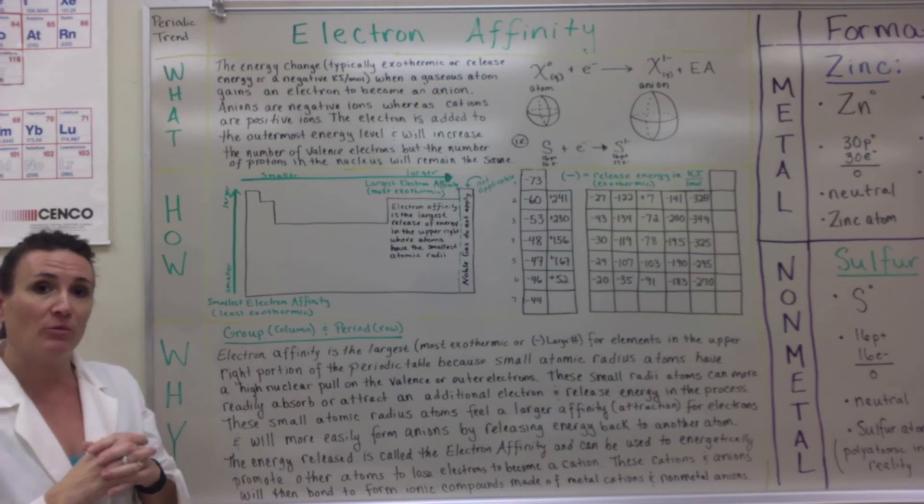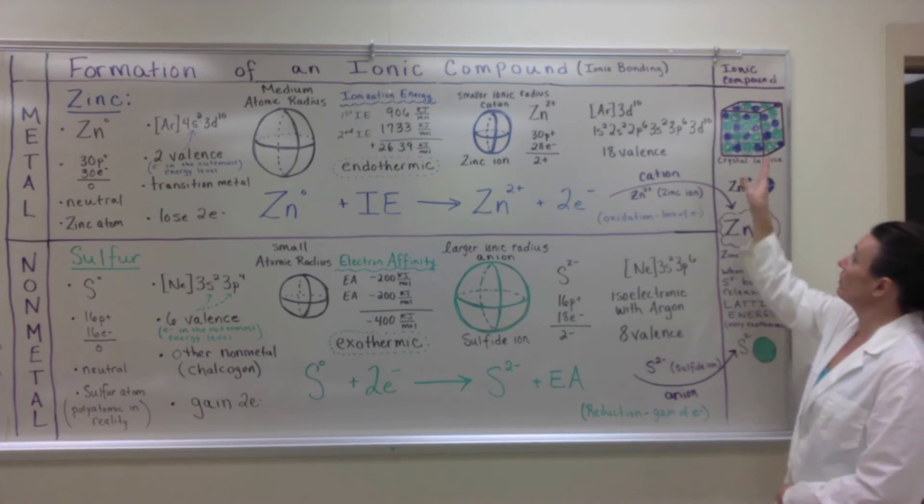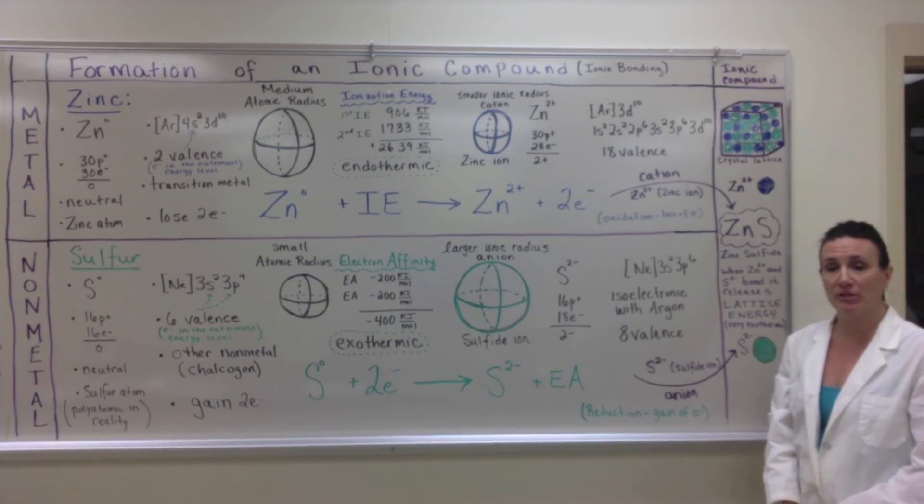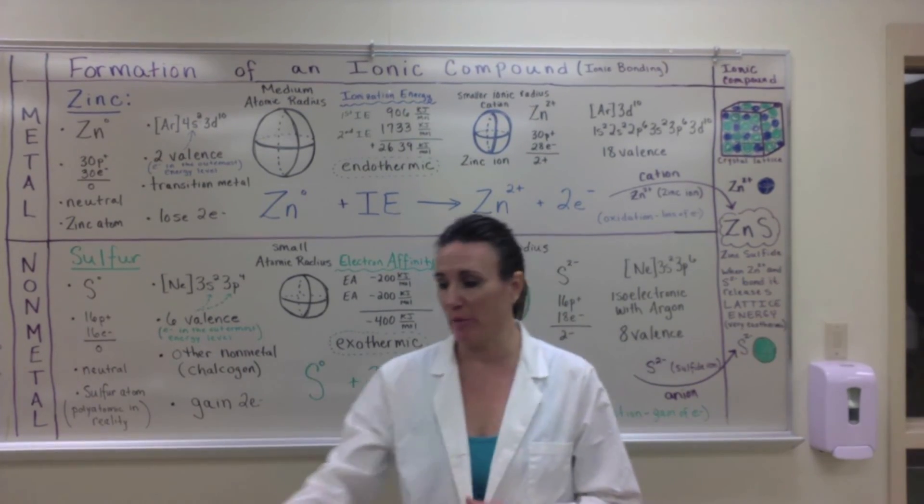There's one more thing we have to go through, which is lattice energy. Lattice energy is the energy released when all of the cations and anions line up in building crystal lattice structure. It's very exothermic energy, and it allows the ionic bond to form.